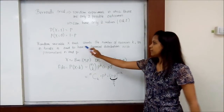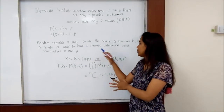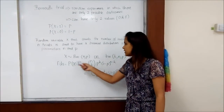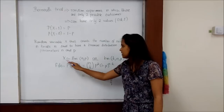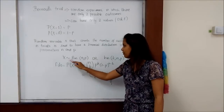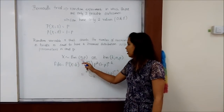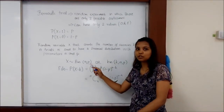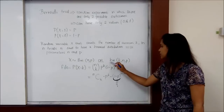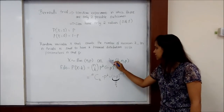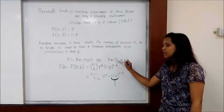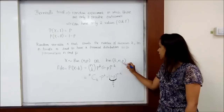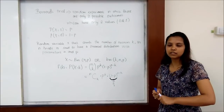If these conditions occur, then a binomial distribution will happen. It can be represented by this form where x is said to have a binomial distribution with total number n and probability of success p. Here, k is the number of successes, n is the total number of trials, and p is the probability of success.